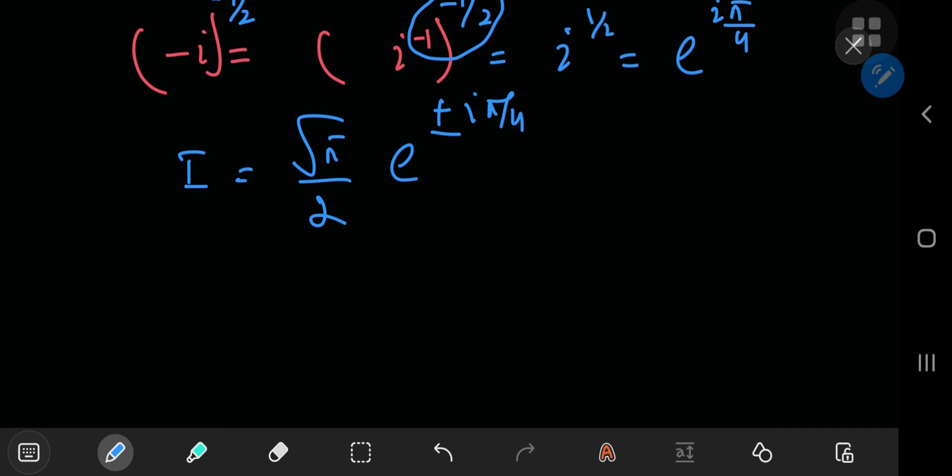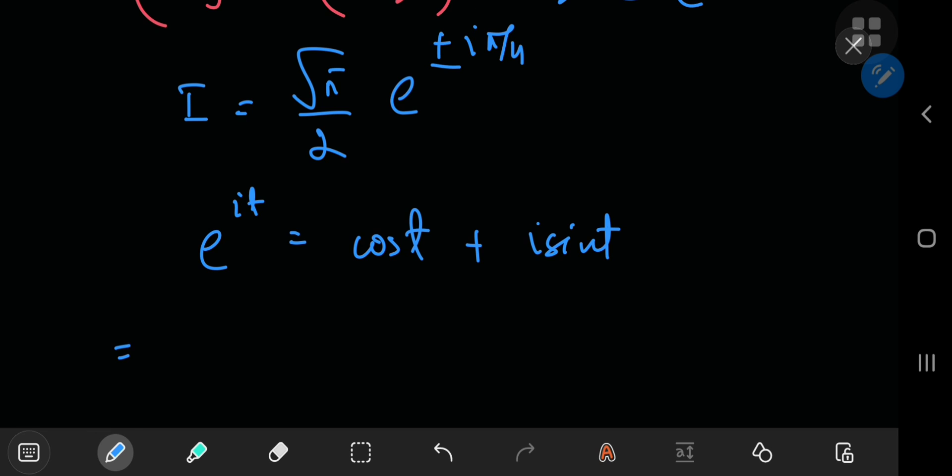finally, we can use that beautiful Euler's formula. So e to the i t equals the cosine of t plus i times the sine of t. So this